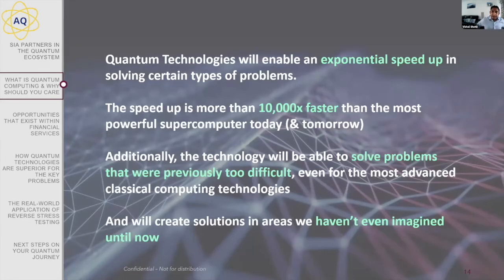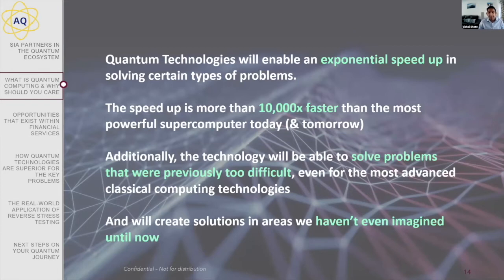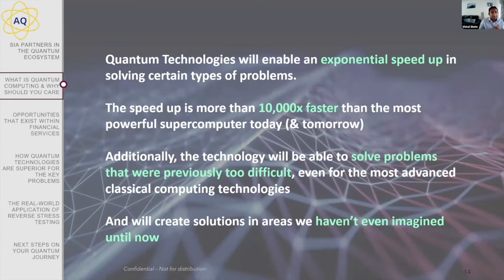Why is all this important and why should we care? Quantum technologies enable an exponential speedup in solving certain types of problems — for certain problem types, they're 10,000 times faster than the most powerful supercomputer of today. But it's not just speed. With quantum technologies, you're also able to solve problems that people realized they had but found too difficult to resolve, and certain types of problems that organizations know exist but don't bother solving because they think it's impossible.